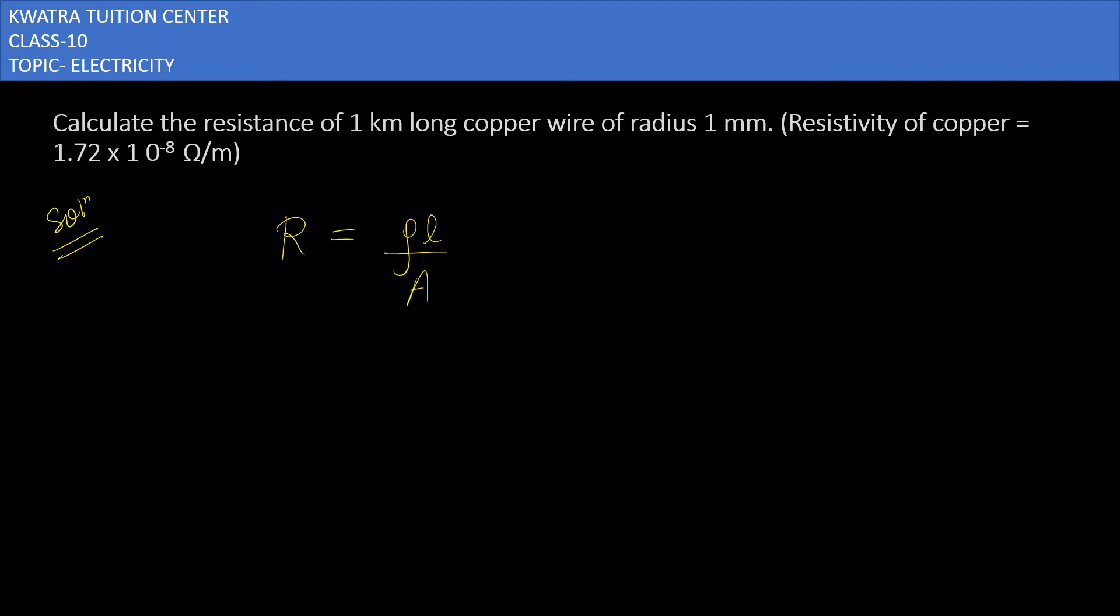Rho is the resistivity, L is length. You know the area. What is the cross section area? Here we have pi r squared.